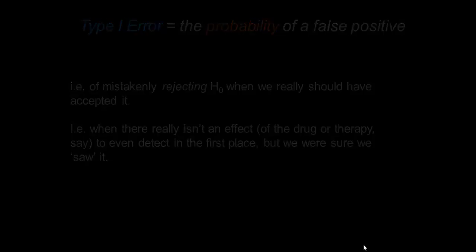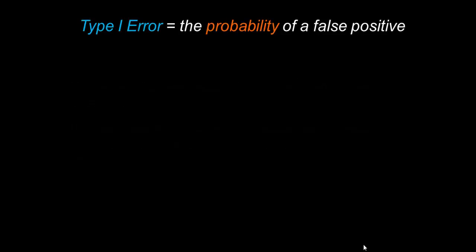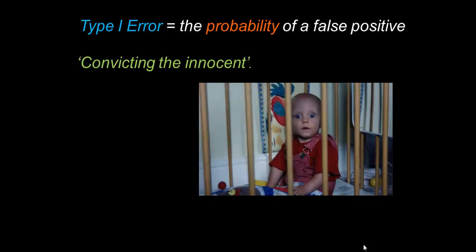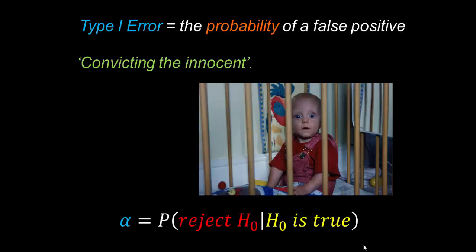In this sense it is the opposite of a Type II error. A nice illustration will come again from the criminal justice system. A Type I error will be where we convict the innocent. So poor Thomas here hasn't really stolen the biscuit but he was punished for it anyway.